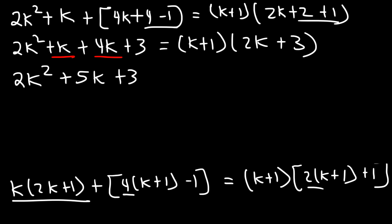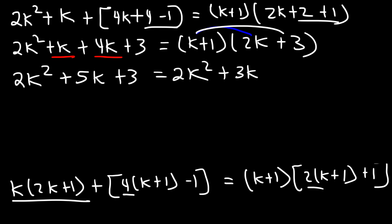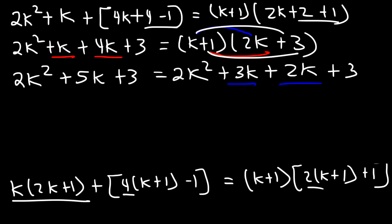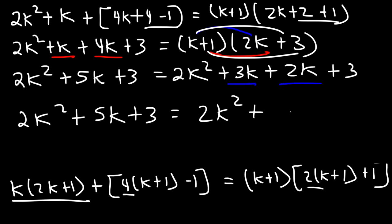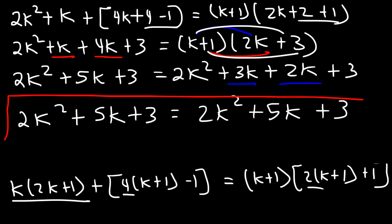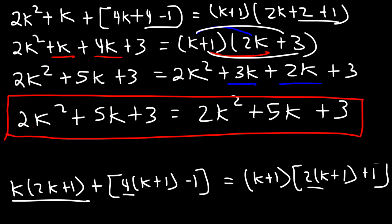And on the right, we need to FOIL. So we're going to have K times 2K, that's 2K squared. And then K times 3, which is 3K. And next, 1 times 2K. And finally, 1 times 3, which is 3. On the right side, let's combine like terms: 3K plus 2K. So on the left, we're going to have 2K squared plus 5K plus 3. And on the right, we're going to have the same thing — 3K plus 2K is 5K. So the left side is equivalent to the right side. That's how we can prove that the original statement is true for any value of n. That's the basic idea behind mathematical induction.